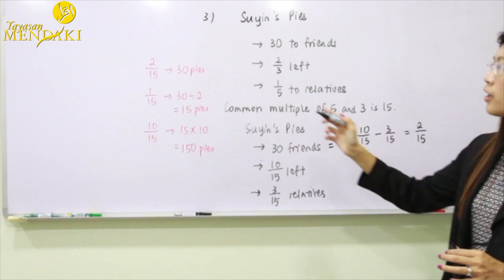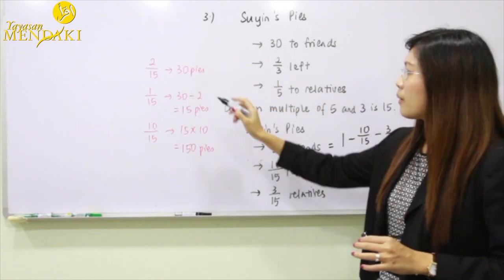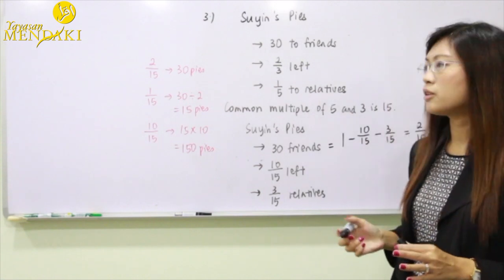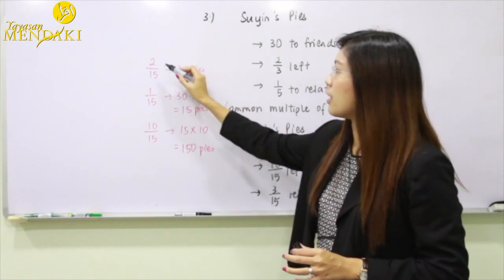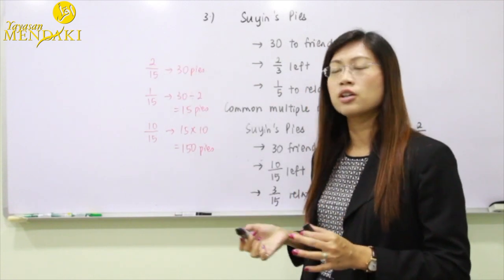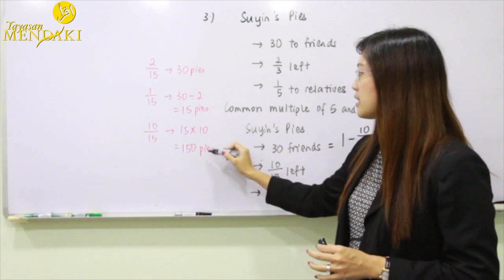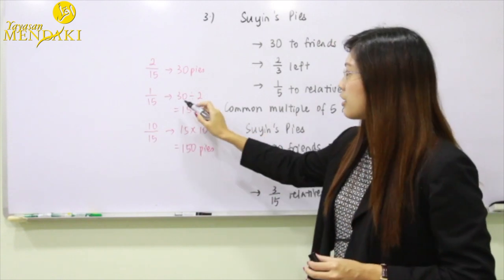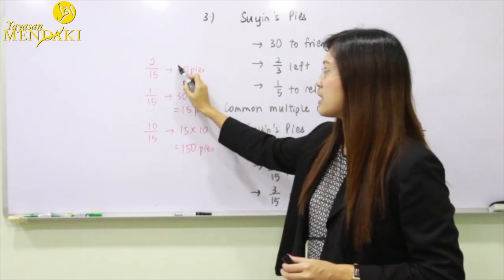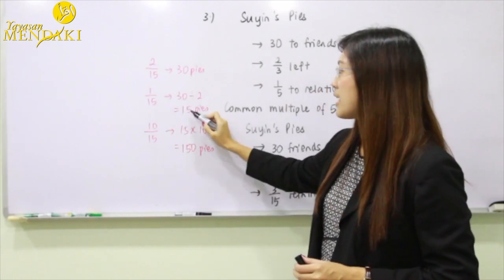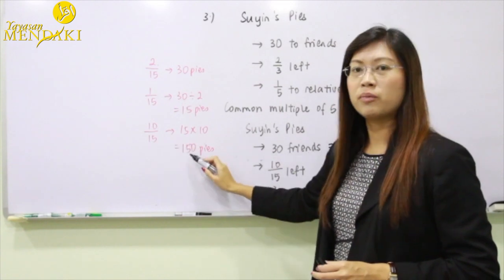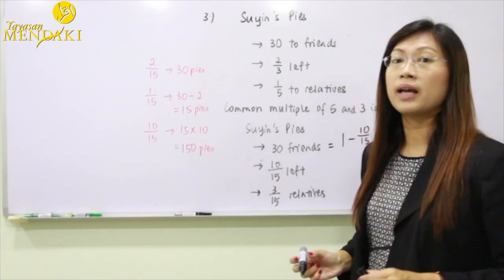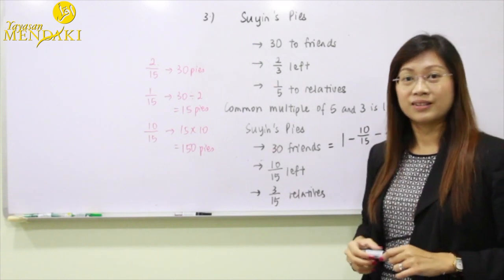Since 2 out of 15 units represents 30 pies, one unit represents 15 pies. Therefore, 10 units represents 150 pies, which means there are 150 pies left. If you need more questions, check the link below. Thank you for watching.